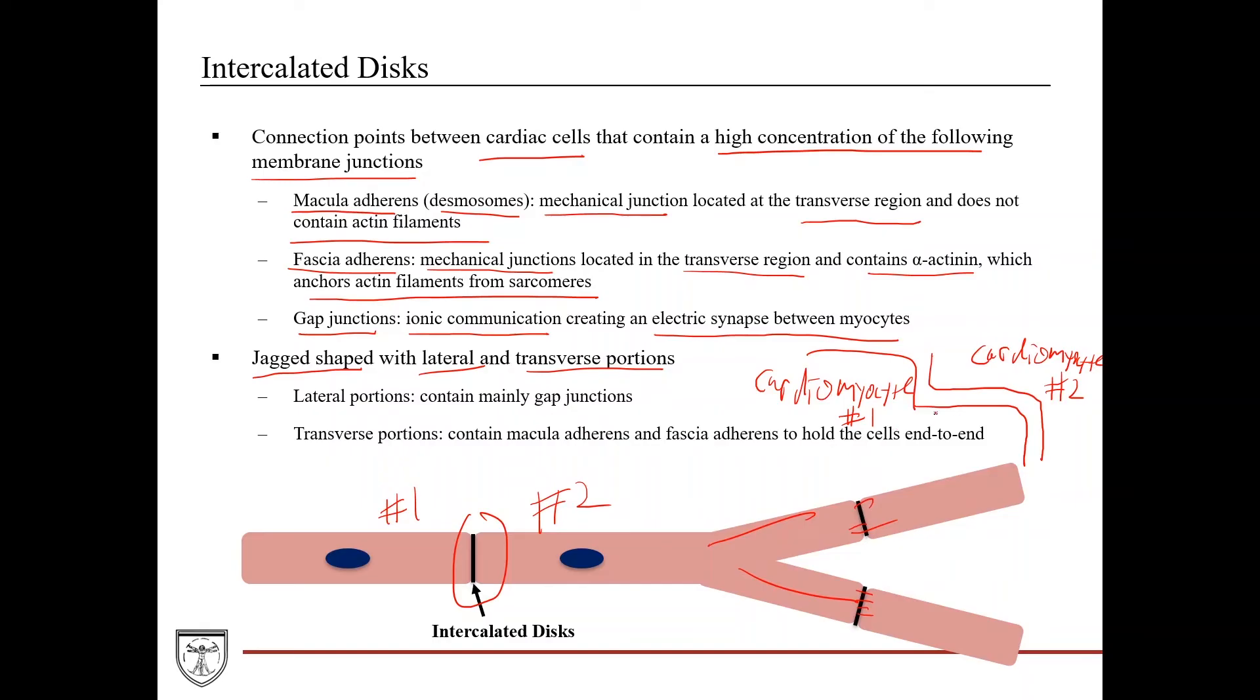So if you were to zoom in even more so on these, what you would notice is that this portion, this more flat portion, this would be the lateral portion here, and these would contain mainly gap junctions. So these would be gap junctions. And then on the transverse portions, which would be here and here, and then at an angle here and here, these lines would correspond to the macula adherens and the fascia adherens. So the lateral portions are for forming those electrical synapses via the gap junctions. And then these transverse portions are more for creating a mechanical junction and holding the cells end to end.